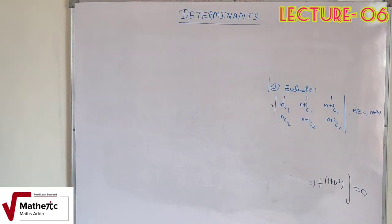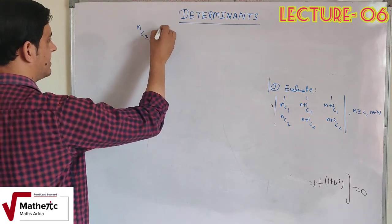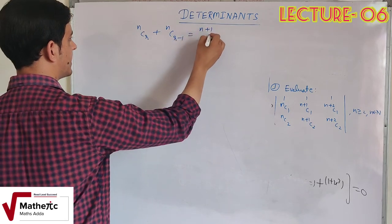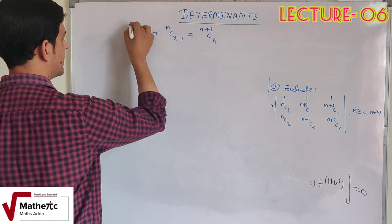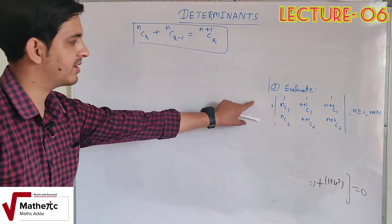Third question solve करने से पहले एक formula याद करते हैं जो आपने 11th class में पढ़ा था: nCr + nCr-1 = n+1Cr. यह formula permutation and combination में था। इसी formula का हम यहाँ पर use करेंगे।